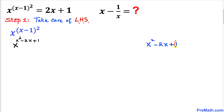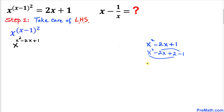I can write this 1 as 2 minus 1. So therefore this exponent could be written as x squared minus 2x plus 2 minus 1. Now I'm going to rearrange this by grouping: x squared plus 2, and then minus 2x minus 1.